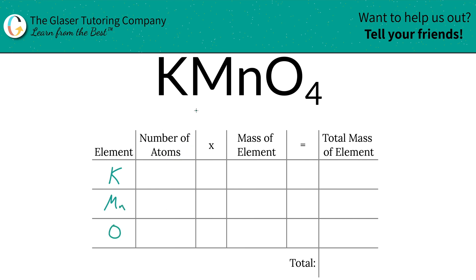Then we're going to identify the number of atoms of each, and that's where the subscripts come into play. Now if you don't see a subscript at the bottom of the element, assume that there is a one there, because there is. So there's one atom each of potassium and manganese, and then there are four oxygens because the subscript of oxygen is a four.